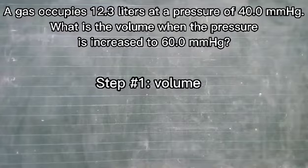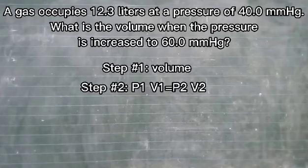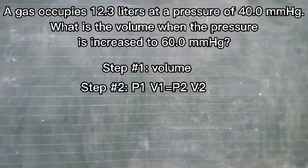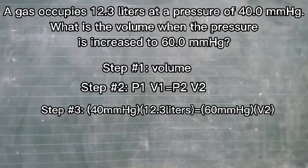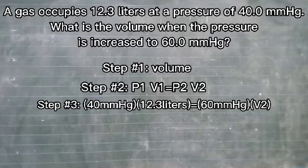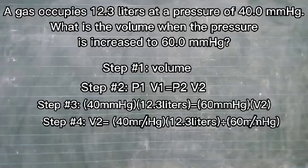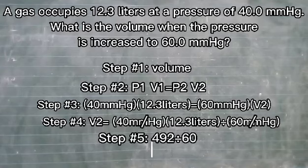Step 1: find the volume. Step 2: apply the formula — P stands for pressure, V stands for volume: P1 × V1 = P2 × V2. Step 3: our P1 is 40 mmHg and V1 is 12.3 liters, equivalent to P2 of 60 mmHg and the missing V2. To find V2, multiply 40 mmHg by 12.3 liters. The answer is 492. Next, divide 492 by 60, and our answer is 8.2 liters.